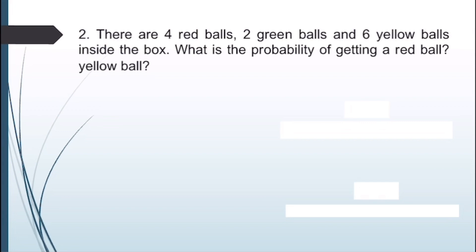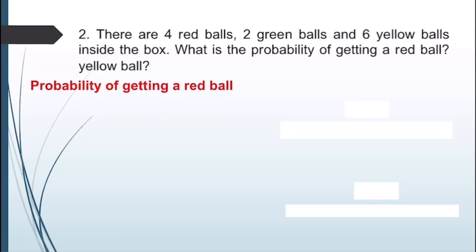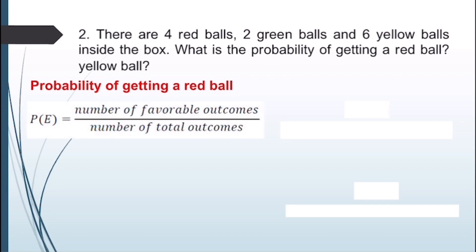For our second example: there are four red balls, two green balls, and six yellow balls inside a box. What is the probability of getting a red ball and a yellow ball? Let's solve first for the probability of getting a red ball. Using the formula, probability of an event equals number of favorable outcomes divided by number of total outcomes. The number of red balls is four, so the number of favorable outcomes is four.